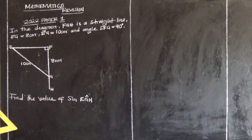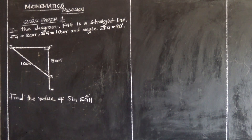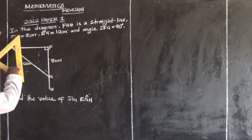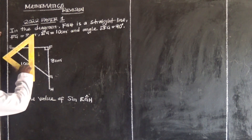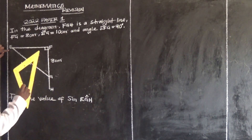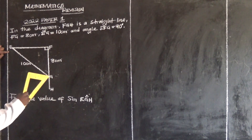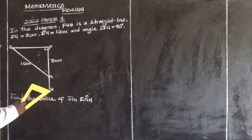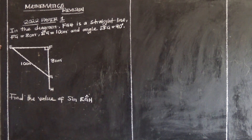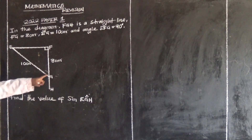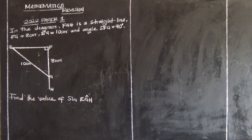Let's look at the 2022 Paper 1 question on trigonometry. In the diagram, FGH is a straight line, as you can see.